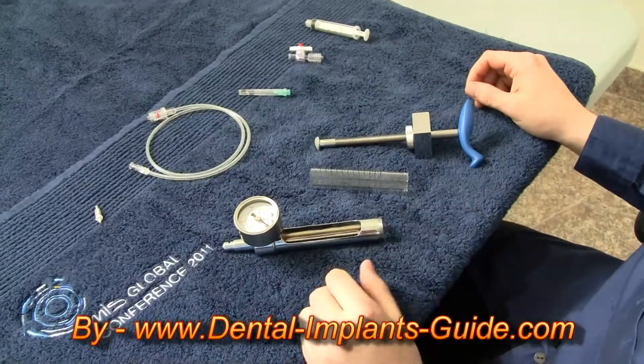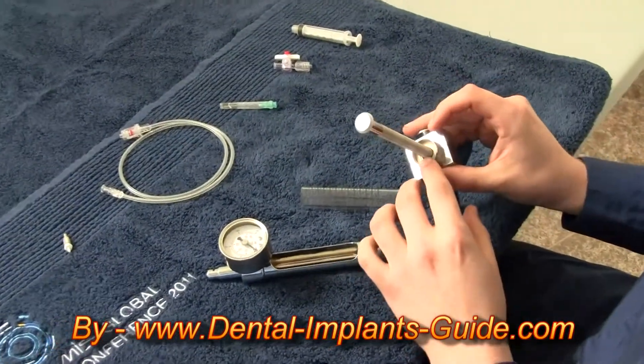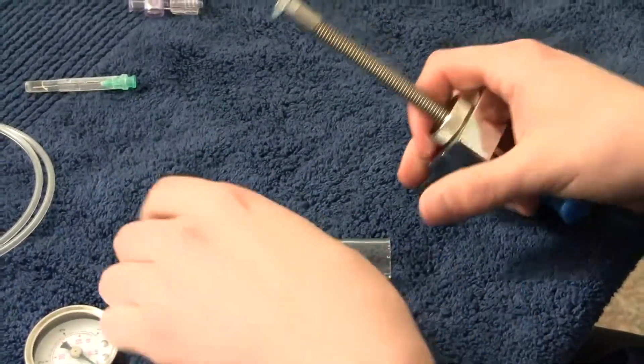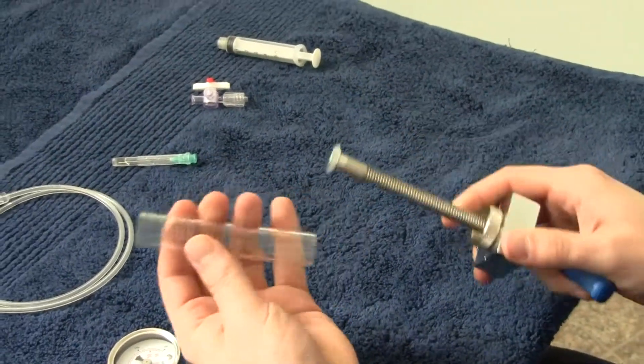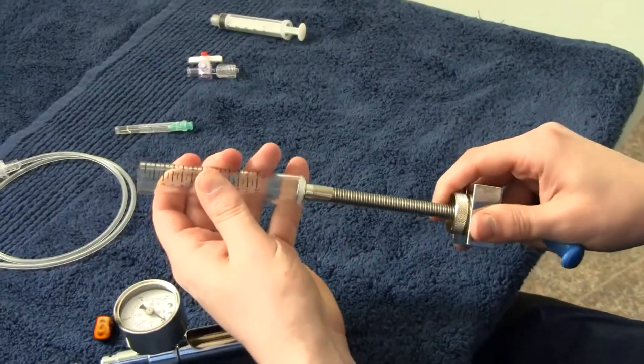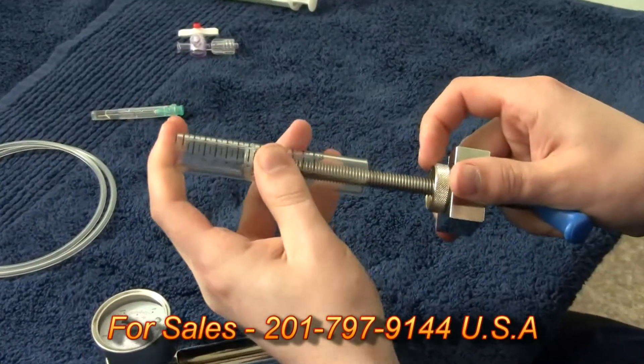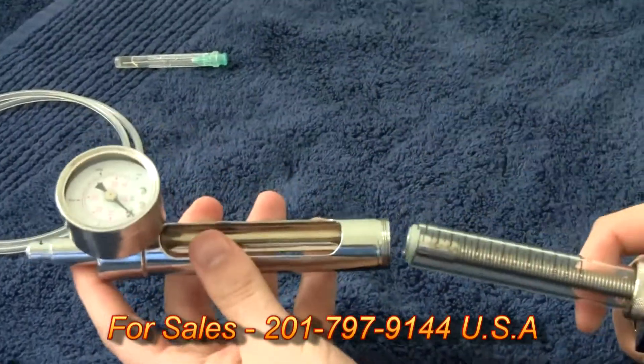After sterilization of all parts in an autoclave, take the handle of the end deflator and wet both rubber gaskets with sterile saline. Then wet the inside of the glass tube and insert the handle. Insert that assembly into the metal syringe and screw it gently.